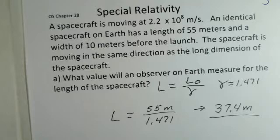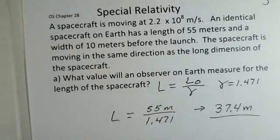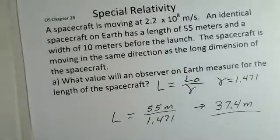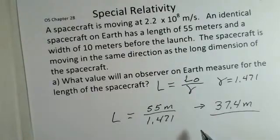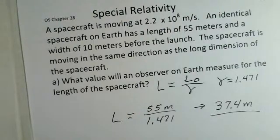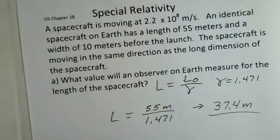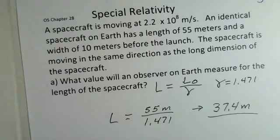We're done. Moving lengths are shorter by the factor of gamma. That's what the observer on Earth will measure. The observer in the spacecraft would measure 55 meters for the length of the spacecraft. But the observer on Earth, watching this fast spacecraft go by, would just measure 37.4 meters. That is the length of the fast-moving spacecraft.